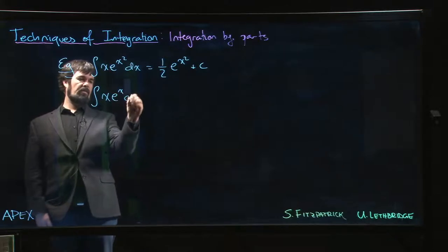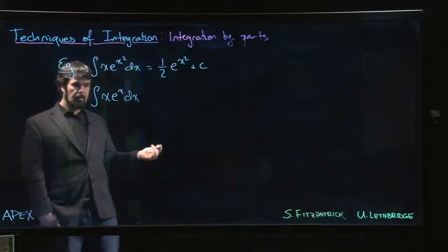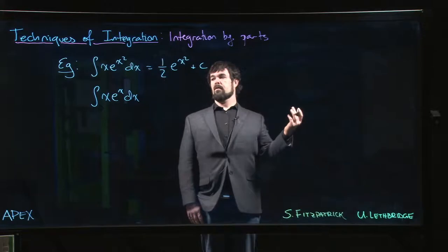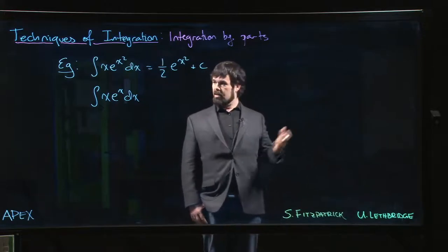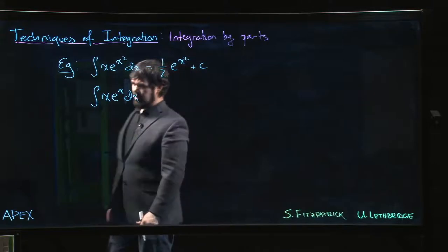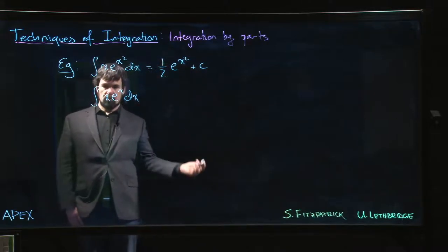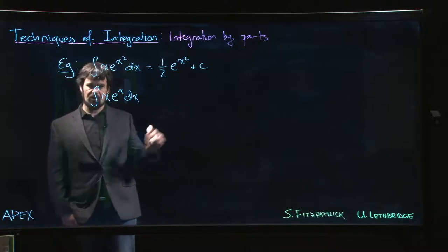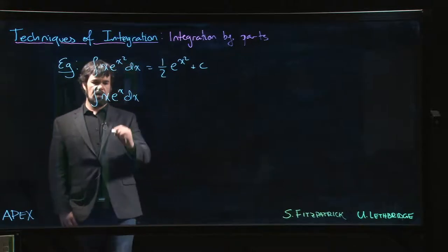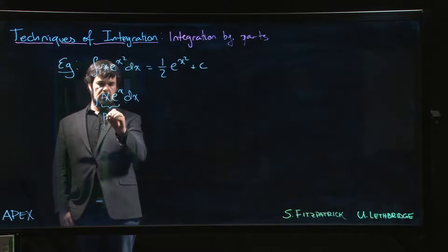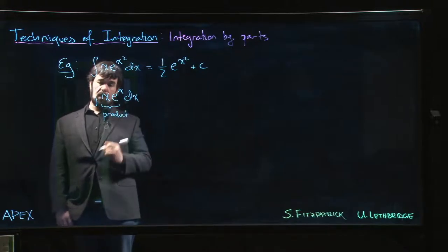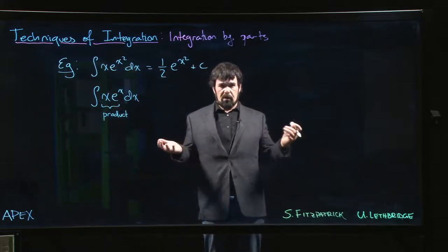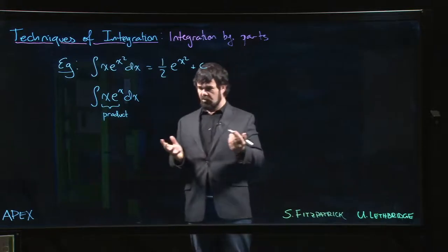But what if you just had x·e^x? Substitution doesn't get you anywhere here. You could let u = x, but then you're just changing the letter. Let u = e^x? Well, that's going to bring logs in — it's going to be a mess. So what you do is recognize that this is a product, and think: so far we've been focused on reversing the chain rule, but maybe you could also try to reverse the product rule.